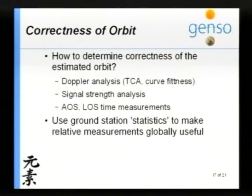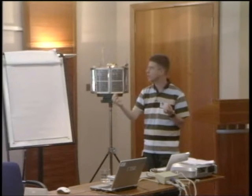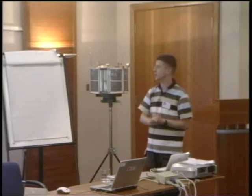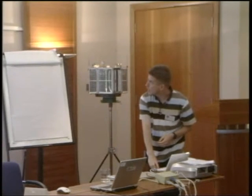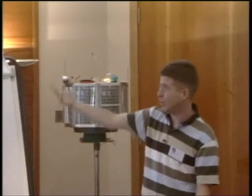How can we determine the correctness of the determined orbit? First, with Doppler analysis, the time of closest approach is a well-defined point in time — you can compare the real one with the observed one. You can do curve fitting because the Doppler curve fits very well. You can also do an analysis of your signal strength — it will follow a curve — and you can look at acquisition of signal and loss of signal in time. The definition of a correct orbit: you can look at the percentage of data received in GENSO compared to the maximum possible, do a mathematical deviation compared to NORAD, and look at the timeframe — the speed at which GENSO is able to get the right orbit.